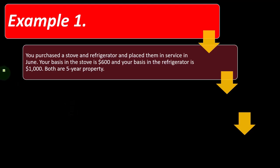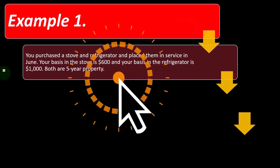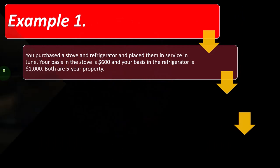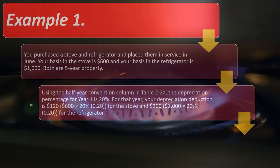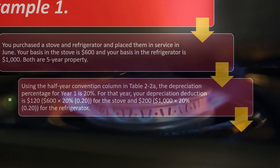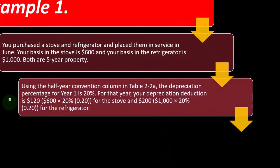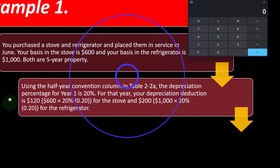For example, you purchased a stove and refrigerator and placed them in service in June. Your basis in the stove is $600 and your basis in the refrigerator is $1,000. Both are five-year property. Using the half-year convention column from the table, the depreciation percent for year one is 20%, so your depreciation deduction is $120 for the stove and $200 for the refrigerator.